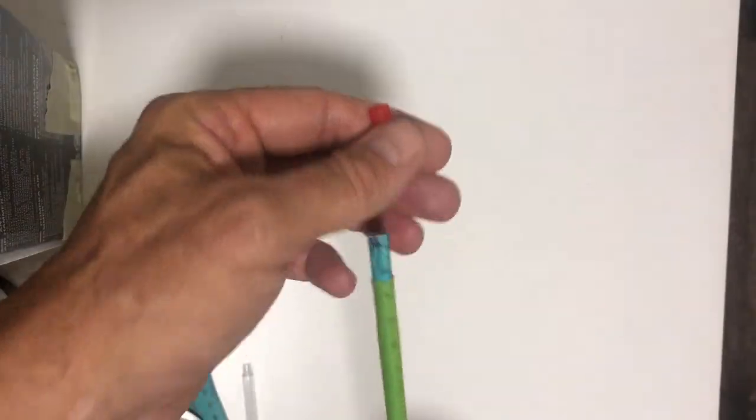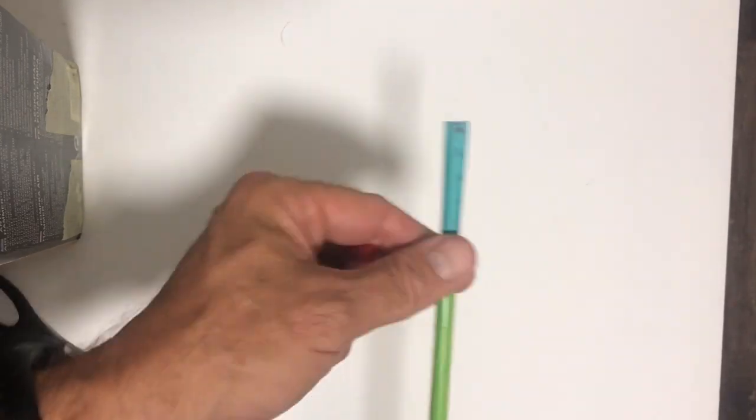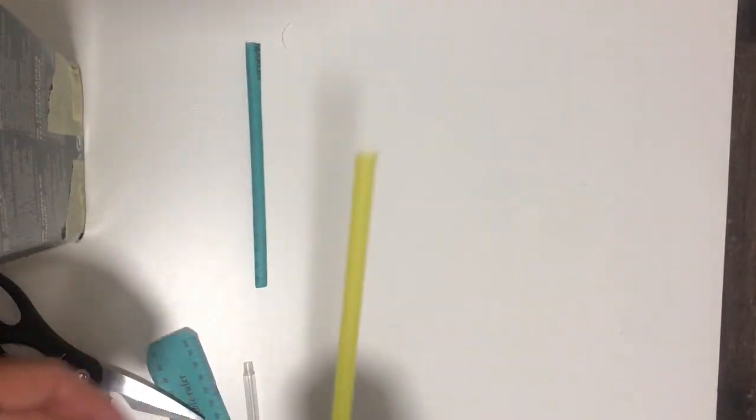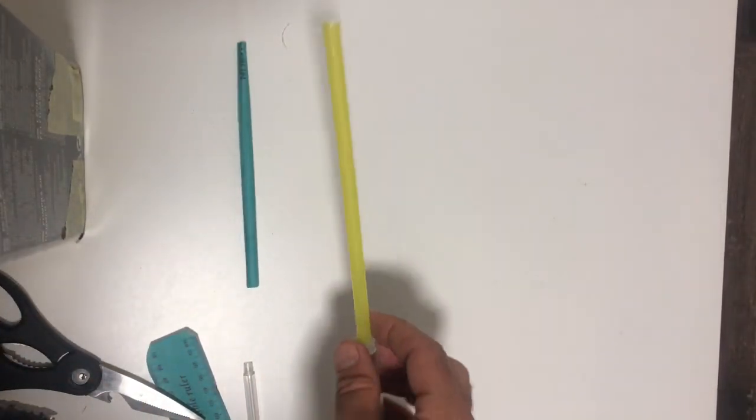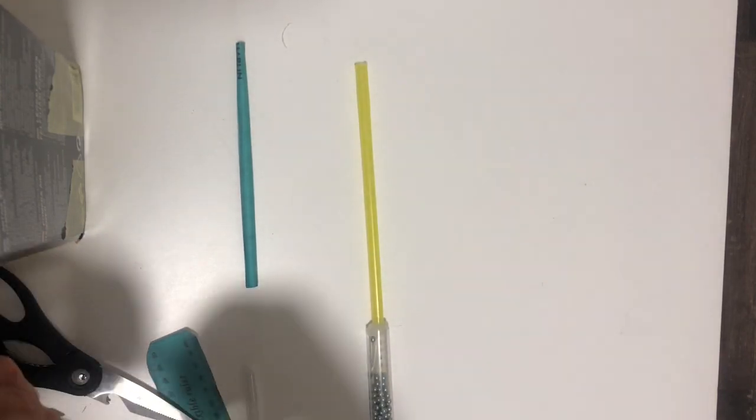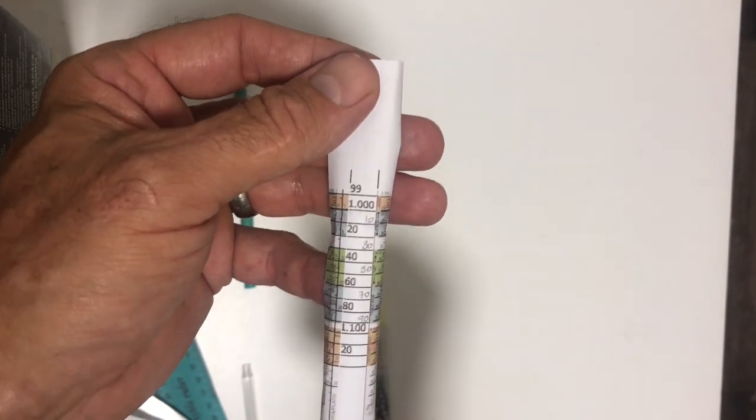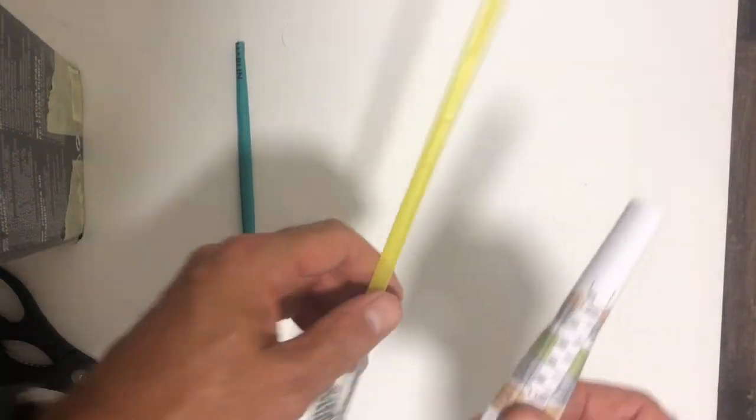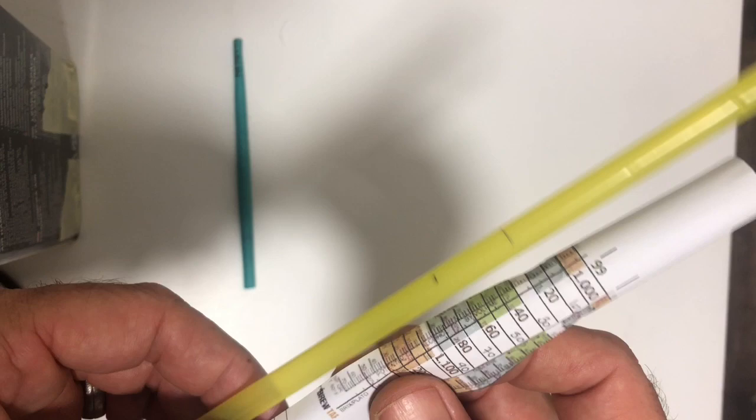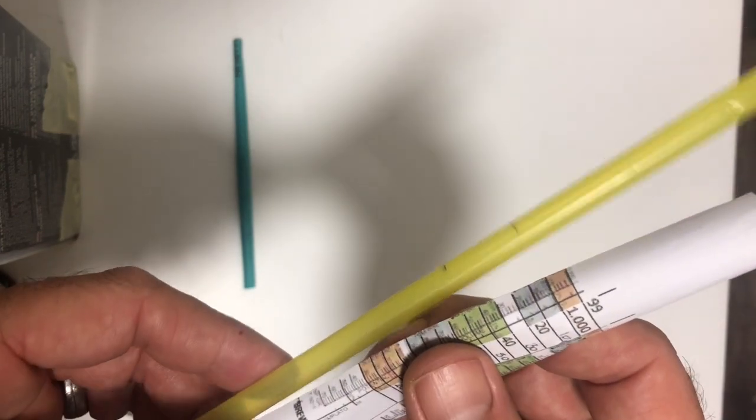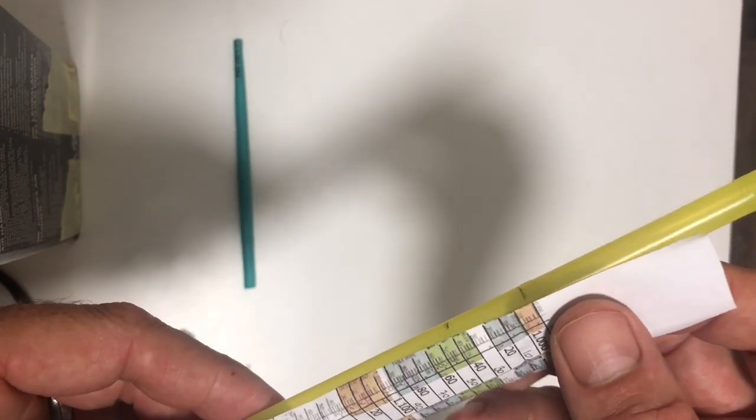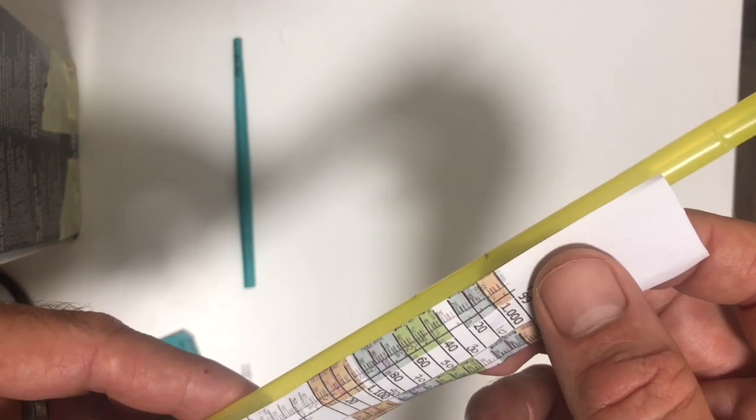You've printed your cropped image, go ahead and cut it out and you're going to roll it up and stick it into the straw. Before you do that, make sure that your 1.000 mark lines up with the 1.050 mark.